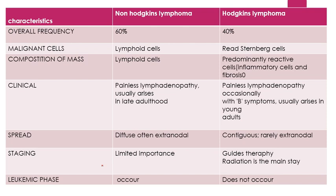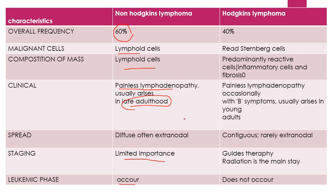Non-Hodgkin's Lymphoma is more frequent than Hodgkin's Lymphoma. The lymphoid cells compose the mass, and clinical features include painless lymphadenopathy. It arises mostly in the adult population. The spread is extranodal and staging is of limited importance. The leukemic phase can also occur, as already mentioned.